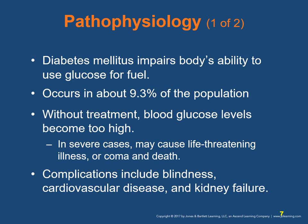Diabetes is a disorder of glucose metabolism in which the body has an impaired ability to get glucose into cells for energy. It affects about 9.3% of the population. Without treatment, blood glucose levels become too high; in severe cases it may cause life-threatening illness, coma, or death. If not managed well, it can cause complications such as blindness, cardiovascular disease, and kidney failure. There are three types: diabetes mellitus type 1, type 2, and pregnancy-induced gestational diabetes.